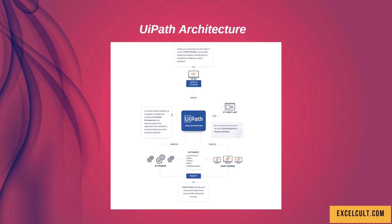This is how the architecture of UiPath looks like. It starts with UiPath Studio where we are actually implementing our process, then we deploy it to Orchestrator. In turn, Orchestrator can be connected to third-party apps, then from there we go to the executor which is our Robot. The robot can be of two types: attended and unattended, which we'll talk about in later sessions.